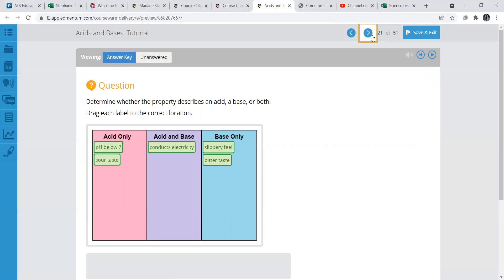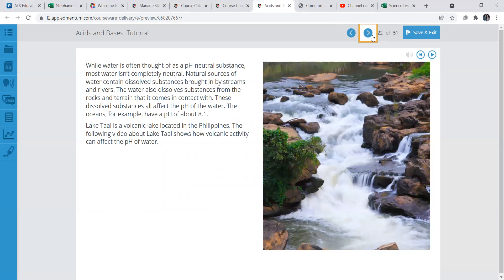Acid pH is going to be below seven. Bases, obviously anything above water is considered neutral. Acids and bases do conduct electricity, which is pretty interesting. Kind of a fun fact.